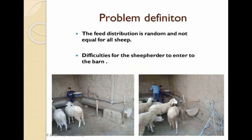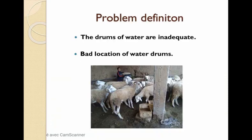We have selected the issue of preferred distribution of sheep feed in a barn. The sheep herder suffers from the lack of equivalent nutrition opportunities for all sheep. In order to solve the issue, we have to produce a design that makes the feed efficient and equal to all sheep.